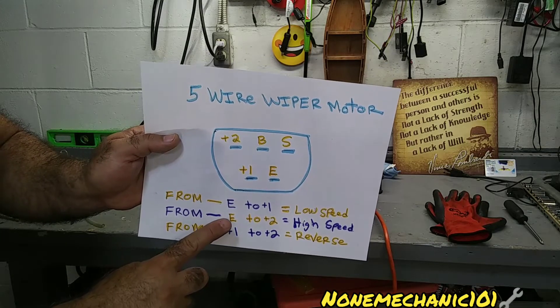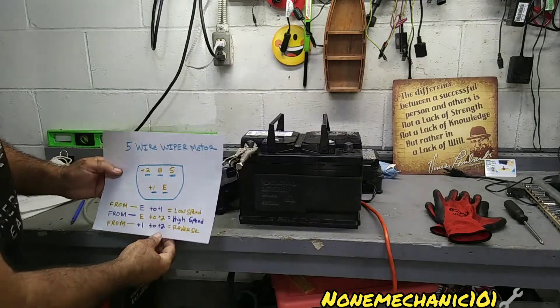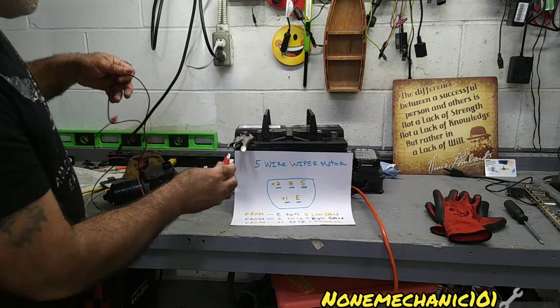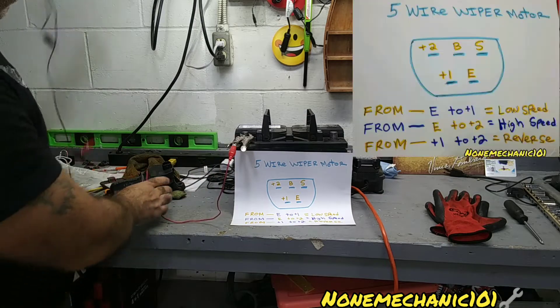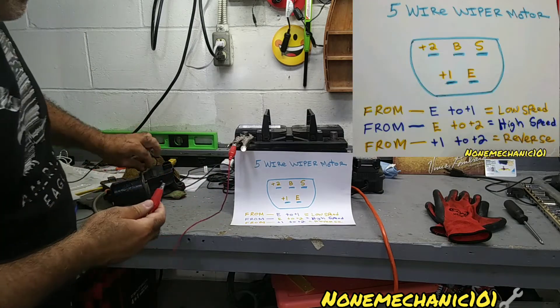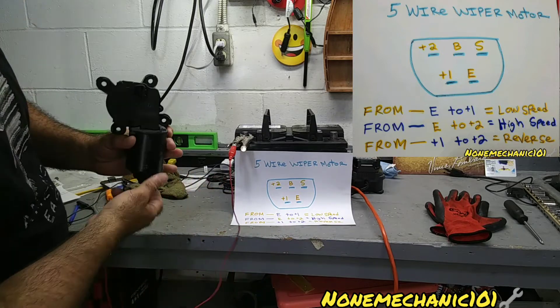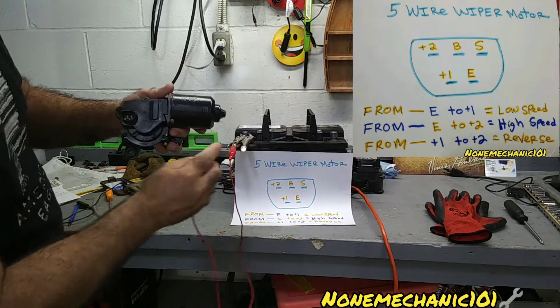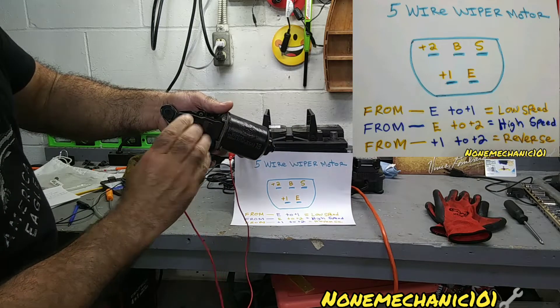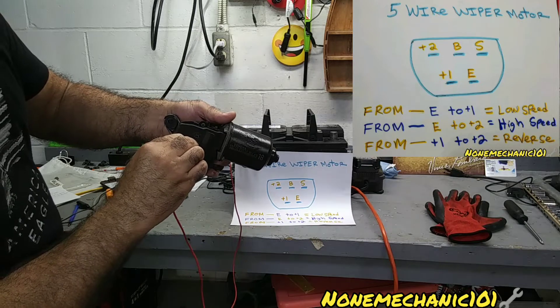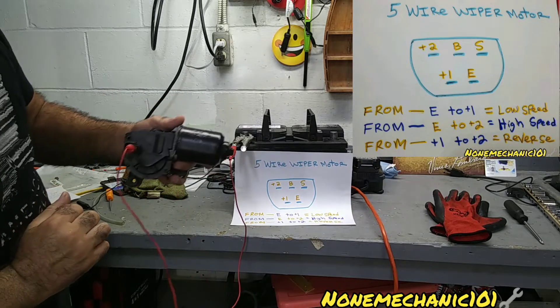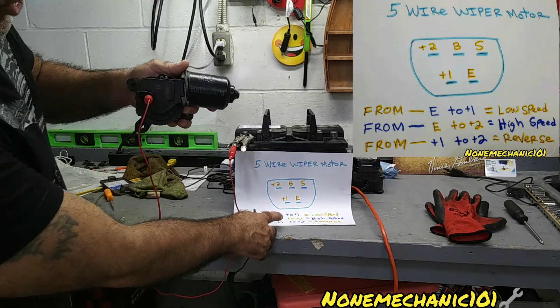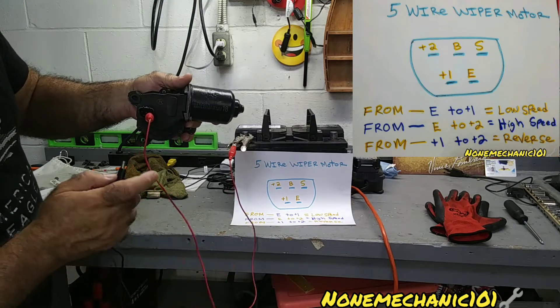The first one we're going to do is go from E to +1. We're going to connect one of the wires to the negative, and this one we're going to put on E. So we know that E is over there, so we're going to connect this one right on E. It's connected on E. Now we're going to take this one and go to +1. Remember, E to +1 is low speed.